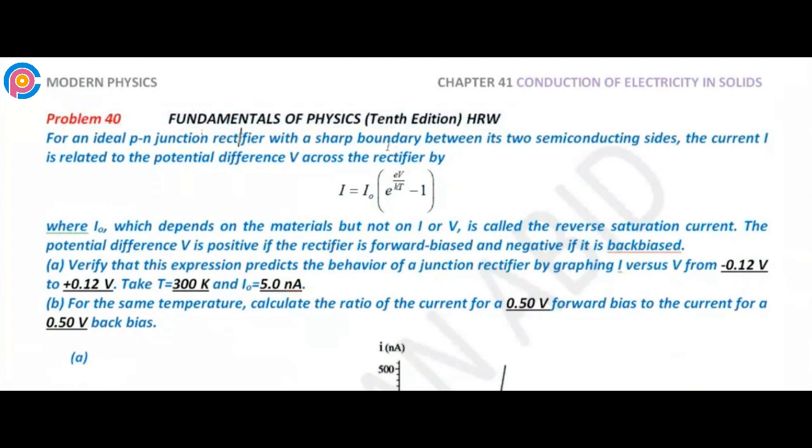For an ideal PN junction rectifier with a sharp boundary between the semiconductor sides, the current related to potential difference V is dependent on the material. The reverse saturation current I_0, which depends on the material but not on I or V, is called the reverse saturation current. The potential difference V of the rectifier is forward biased if negative or backwards.